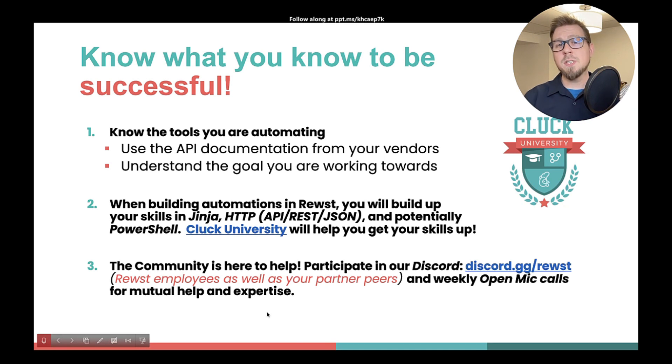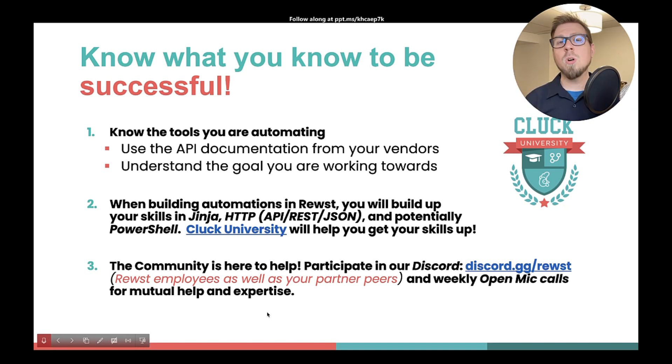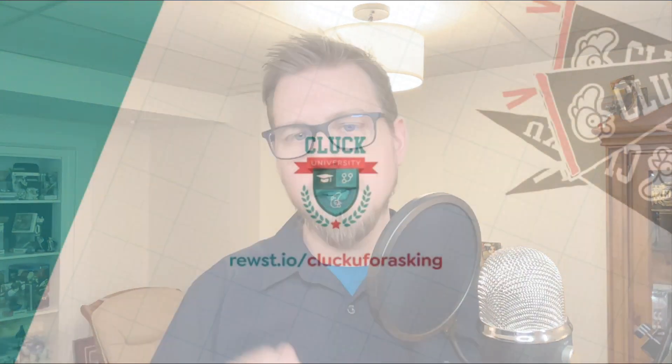You'll find links to these resources either in the description below or on the roost.help page for this video. That's going to do it for this one. Thank you so much for watching. In the next video, we're going to walk through scoping out a small process so you can start thinking about how you want to scope the processes you've chosen to automate. I'll see you in the next one.